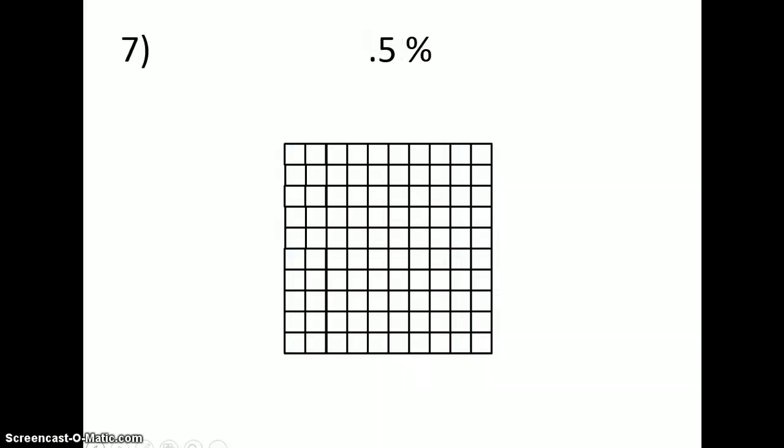Five tenths percent, or a half percent, would mean I would only shade in half of one square, because it is only one half out of 100 squares. Twenty-five hundredths percent, I can think of like a quarter when I'm dealing with money. And a quarter is one-fourth of a dollar, and 25 hundredths is equal to one-fourth, so 25 hundredths percent is one-fourth of a square out of a hundred being shaded in.